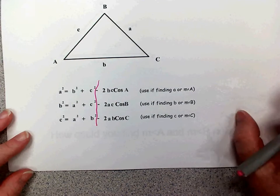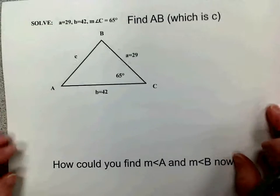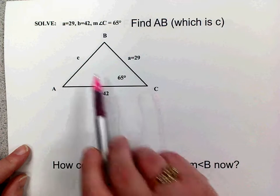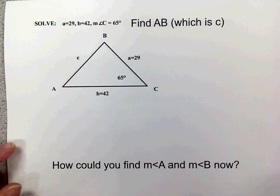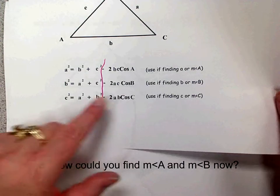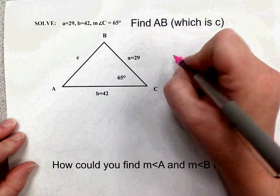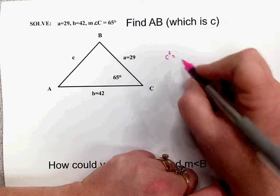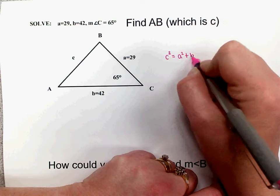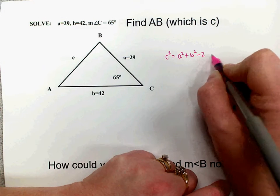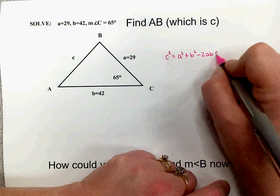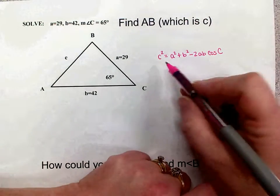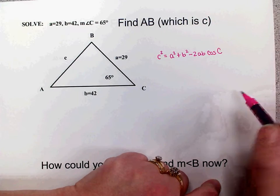Let's look at using the law of cosines. In the first problem we're finding a side length — find AB. AB is across from angle C, so we can call that side C. We'll use the formula where the C's are on the outside: C squared equals A squared plus B squared minus two times A times B times cosine of angle C. Lowercase letters for sides, uppercase for angles.